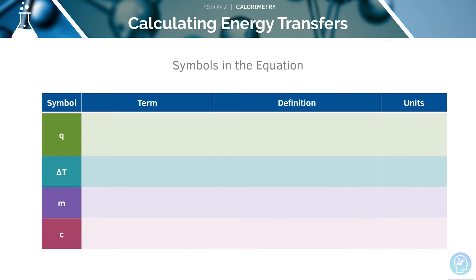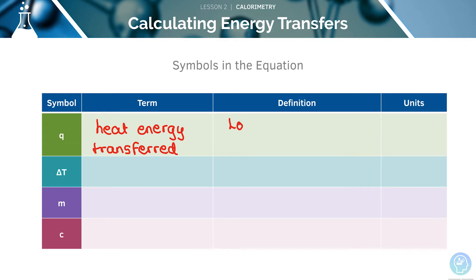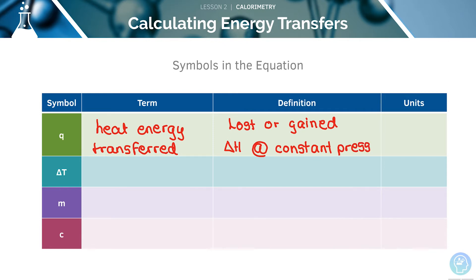Let's have a go at filling in this table. First, we'll start with the symbol Q, which is the term for heat energy transferred. It is defined as the heat that is lost or gained, and it occurs at delta H at a constant pressure. The units for this are joules.